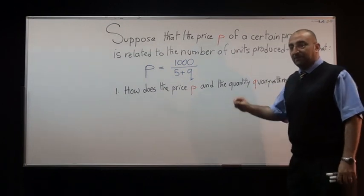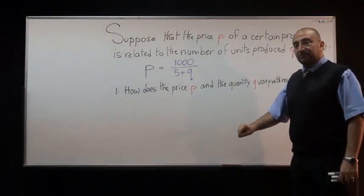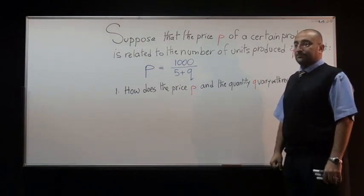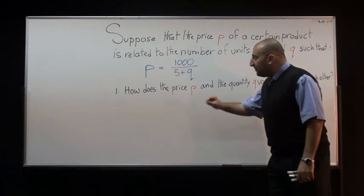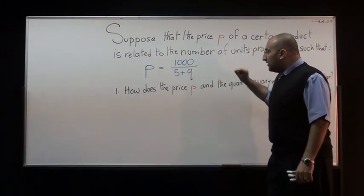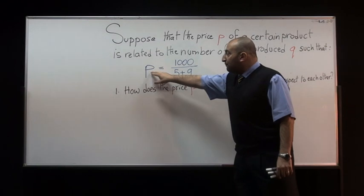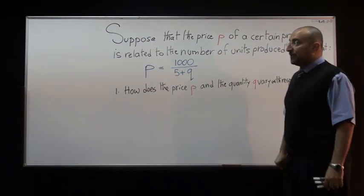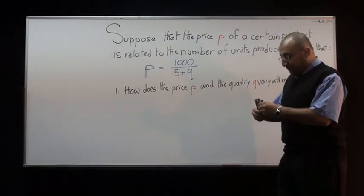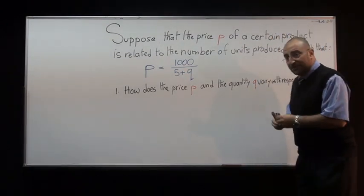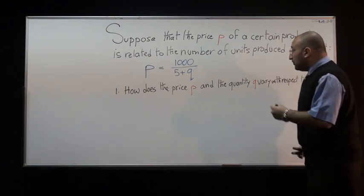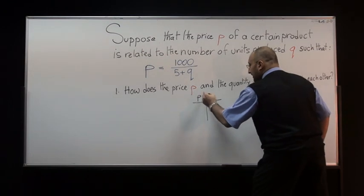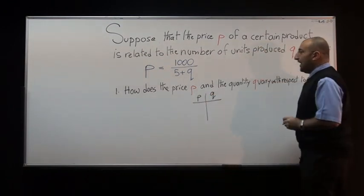I'll give you time to pause and think about this, then press the play button. Now that you're back, we want to find out how P and Q change with respect to each other. We have several approaches; one of the simplest would be to set up a small table that relates the P values with the Q values.